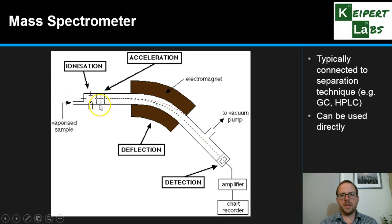The vaporized sample enters here, then we have the ionization and acceleration stages. We have the presence of the electromagnet, which creates a magnetic field where deflection occurs, and then we have detection at the other end where we're processing the signal. This is the general structure.